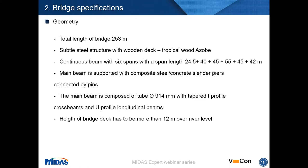The total length of the bridge is over 250 meters. It is composed of a steel load-bearing structure with a wooden deck made of tropical wood. Structurally, the bridge acts as a continuous beam with six spans, with span lengths between 24.5 and 55 meters. The main beam is supported by composite steel and concrete slender piers, which are connected by pins to the main structure.